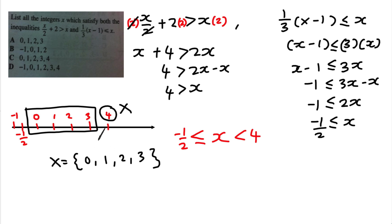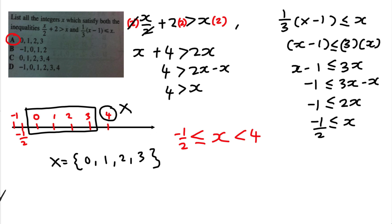Checking the answer choices, I can see the answer is A. I straight away know the answer is A — because I cannot include 4 (it said less than 4), and I cannot include −1 because −1/2 equals −0.5, which lies between −1 and 0, so the next integer bigger than it is 0.